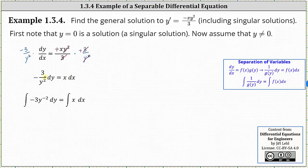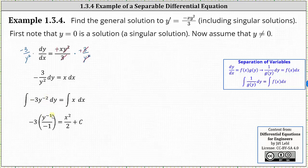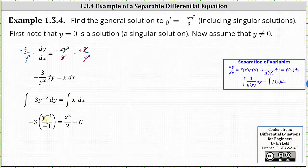Notice how I also wrote three divided by y squared as three times y to the power of negative two. Integrating with respect to y on the left, we have negative three times y to the power of negative one divided by negative one plus a constant, which we'll include on the right, equals on the right, the integral of x dx is equal to x squared divided by two plus a constant. Simplifying on the left, we have three divided by y, which is equal to x squared divided by two plus c.